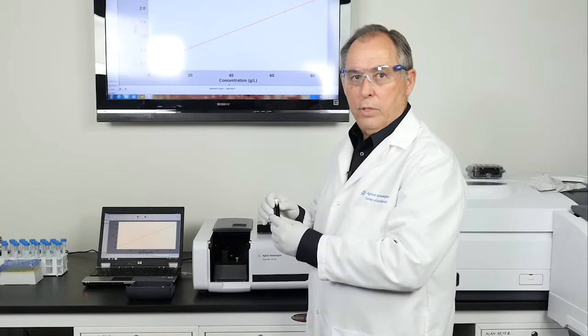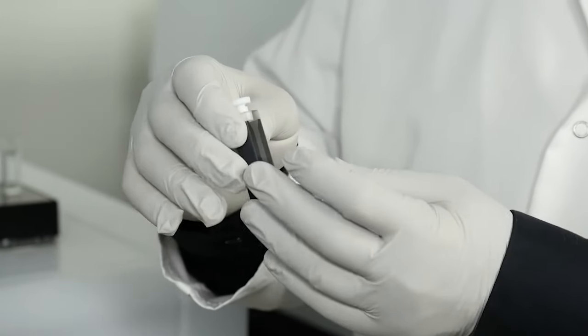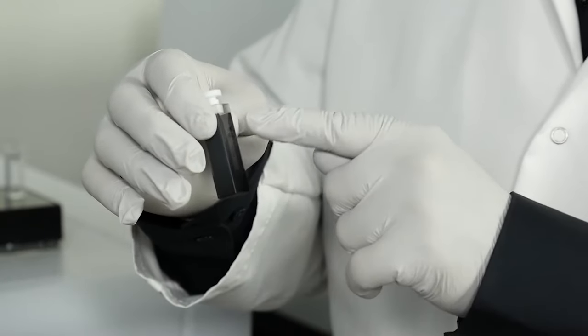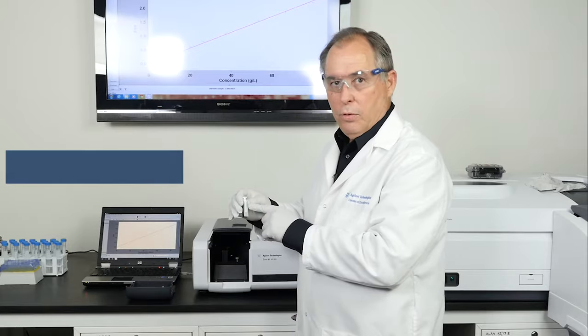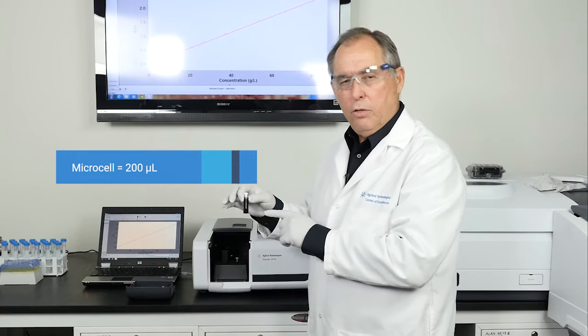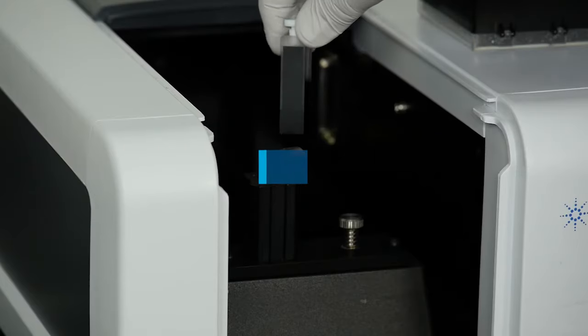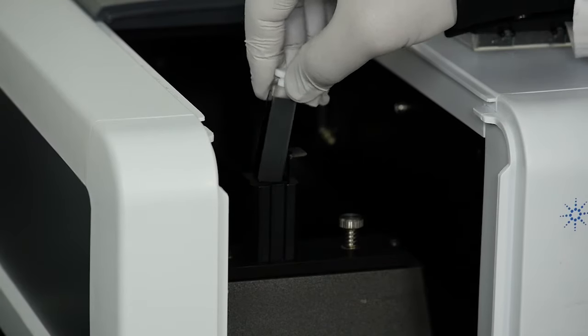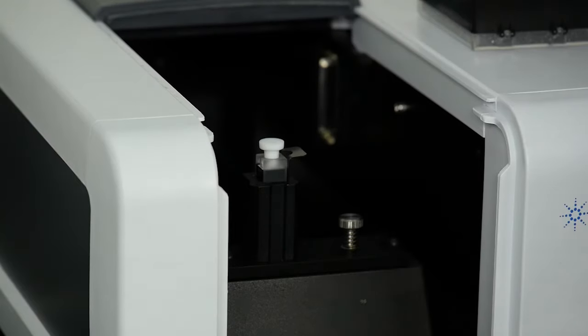The second cuvette that we'd like to look at is called a macro cell. Notice it has thicker walls and that of course takes a volume, but it still keeps the sample at the center of the cuvette. So this allows us to use a reduced volume as well. This usually requires only about 200 microliters of sample. So I'm now going to place it into the sample compartment and we'll repeat the measurement.